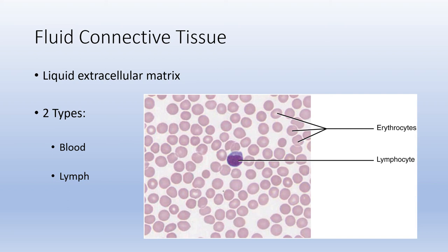Fluid connective tissue has a liquid extracellular matrix — that's why it's called fluid. There are two types: blood and lymph, which will be studied more when covering the cardiovascular and lymphatic systems. Blood contains red blood cells (erythrocytes), white blood cells such as lymphocytes, and the fluid plasma.